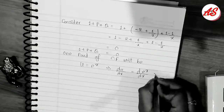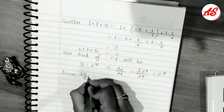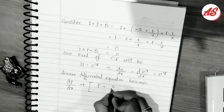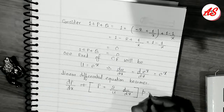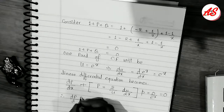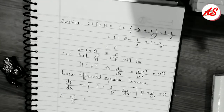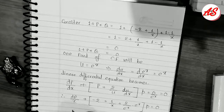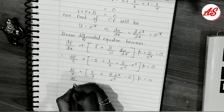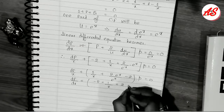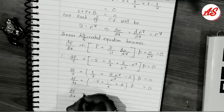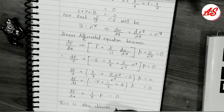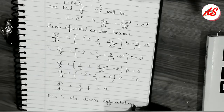Differentiating both sides gives du/dx = e^x. Substituting into the linear differential equation dp/dx + (P + (2/u)(du/dx))·p = R/u and putting in the values of P, R, and u, we simplify and obtain dp/dx + p/x = 0.